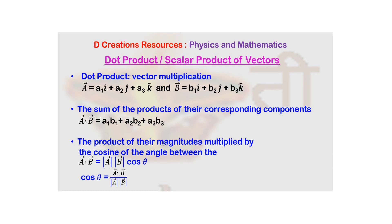Now you have to consider two vectors. Here you can see there are two vectors: A bar which is A1 i cap plus A2 j cap plus A3 k cap, and B bar which is B1 i cap plus B2 j cap plus B3 k cap.